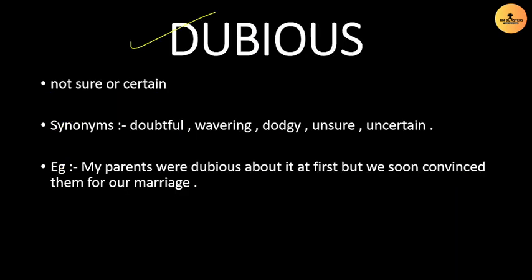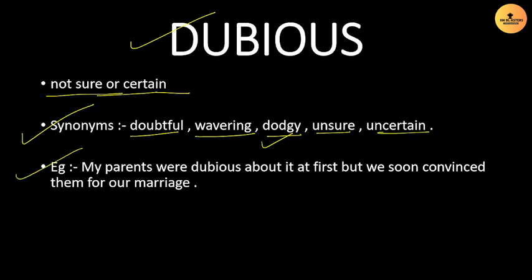Next word is 'Dubious,' meaning something that is not certain or sure of. If you are not sure or certain of something, you are dubious about it. Example: 'My parents were dubious about it at first, but we soon convinced them for our marriage.' It is a common and easily understandable word.